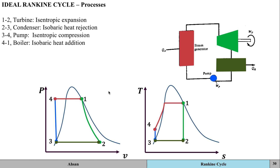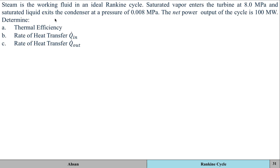We're going to look at a problem for a saturated Rankine cycle. The first thing we need to do is make a schematic diagram based on the information given. Because it's an ideal Rankine cycle, we know there are four subcomponents: the turbine, the condenser, the pump, and the boiler. You label the pressure or temperature values at the states across those components, then draw the TS diagram.